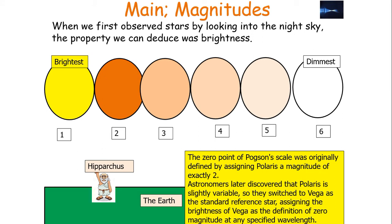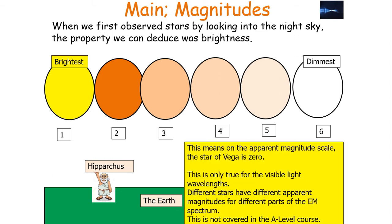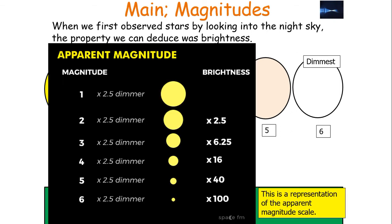The zero point of Pogson's scale was originally defined by assigning Polaris a magnitude of exactly 2. However, Polaris was later discovered to be a slightly variable star whose apparent magnitude changed. Therefore they switched to Vega as the standard reference star, assigning the brightness of Vega as the definition of zero magnitude at any specified wavelength. It is important that this is only true for visible light wavelengths — different stars have different apparent magnitudes for different parts of the electromagnetic spectrum, but this is not covered in the A-level course.